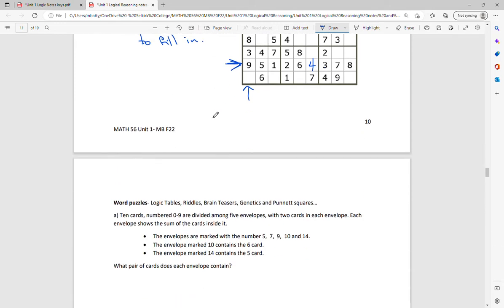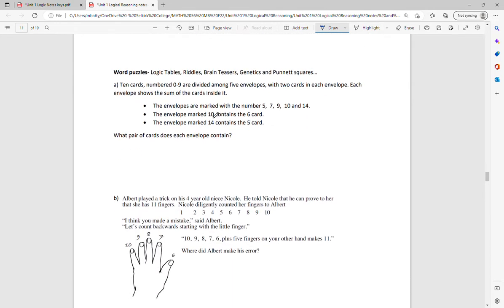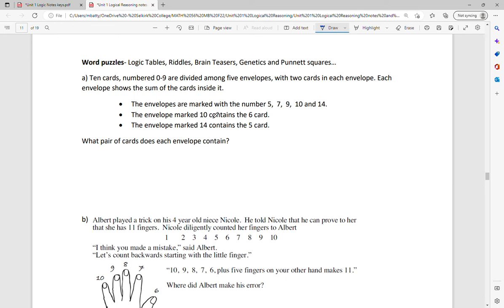The next ones that we're going to do are more word problems. And so these might be logic tables. They might be riddles or brain teasers. I love biology and in genetics or Punnett squares, that's a good example of logic puzzles. So I've got a few examples here. The first one is a bit of like a card trick. So it says 10 cards numbered zero to nine are divided into five envelopes. There are two cards in each envelope. Each envelope shows the total of the cards inside it. So the sum of those numbers. The envelopes are marked with a five, a seven, a nine, a 10 and a 14. So that's what's on the envelopes.